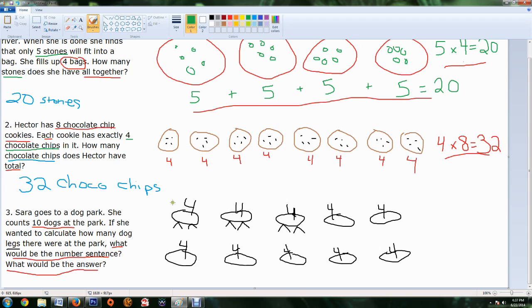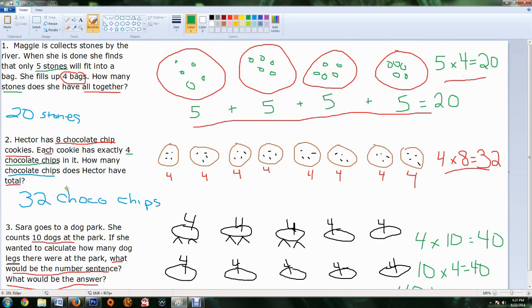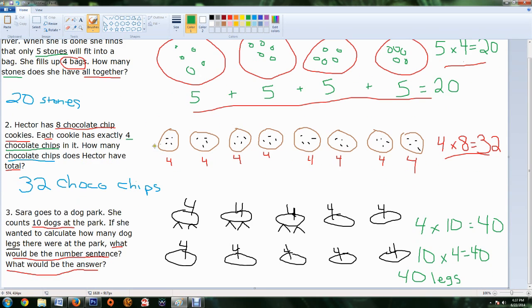All right, so, what would be the number sentence? So, how would we write that as a multiplication problem? Well, we take the number of legs, four, and we multiply it by the number of dogs, ten. And since we know multiplication, four times ten, forty. That's pretty easy. We could also say that there were ten dogs times four legs. And that's also going to get you forty. So, either one of those multiplication sentences would be correct. And what would the answer be? The answer would be forty, but it wouldn't just be forty. What are we talking about? There are forty legs. All right, and there is some steps to walking you through some basic multiplication problems. All right, and there are three.